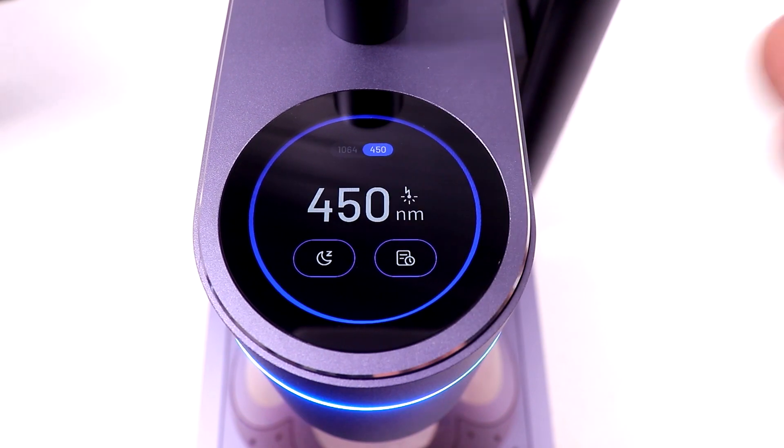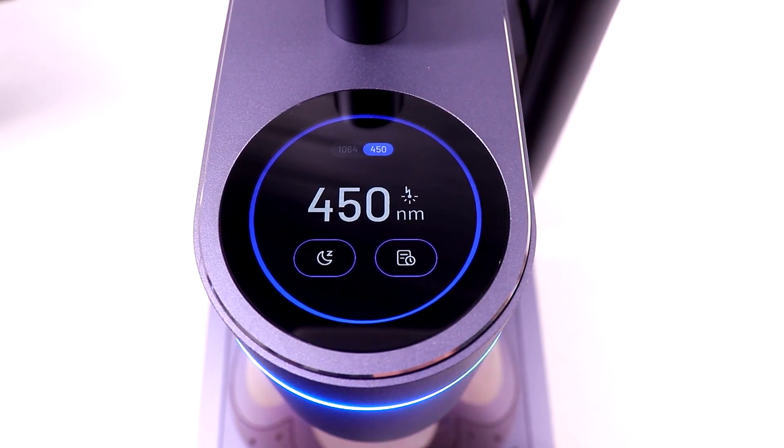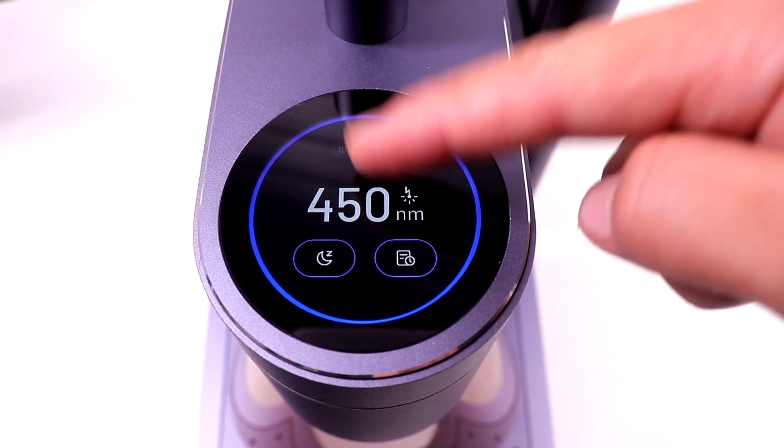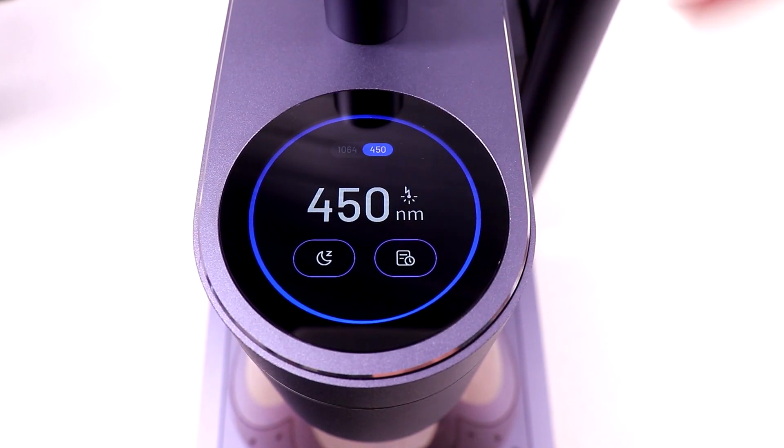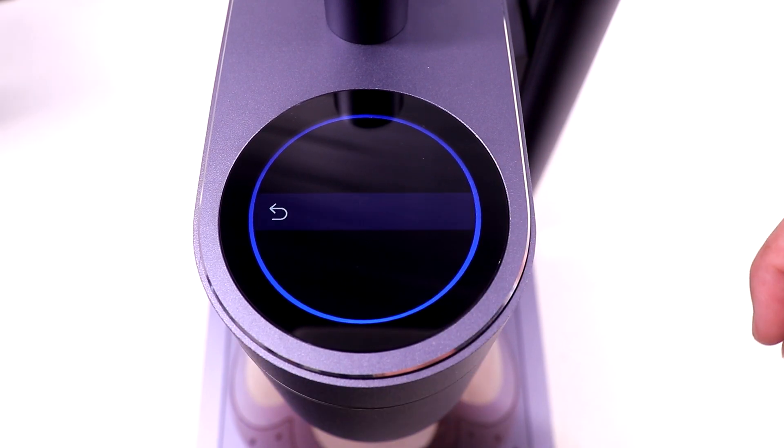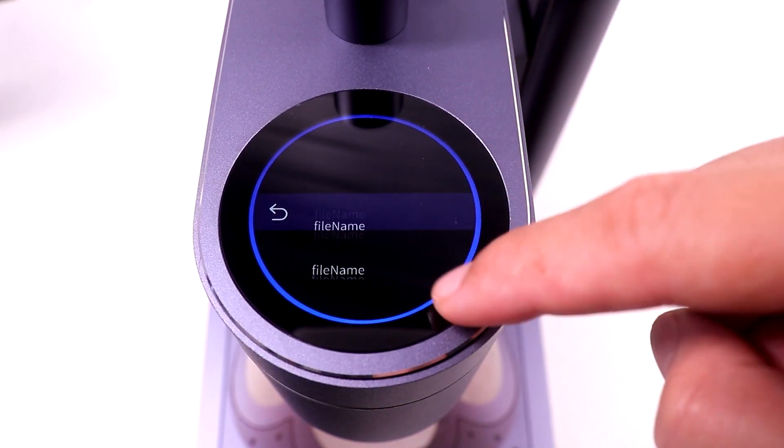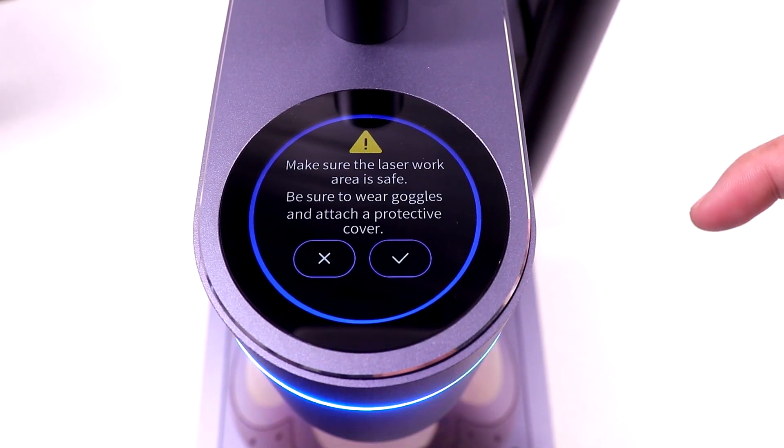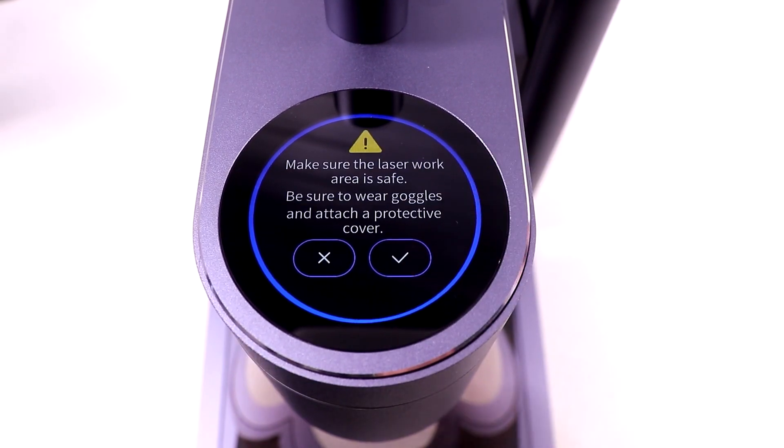So moving on to the screen, we have a nice rounded touch screen right here. You can swipe left or right to switch between different laser. You can also switch it to sleep mode then wake it with one touch. You can also check the print history of all the engravings you've printed. And then you can also print directly from it without using the app which is really cool.